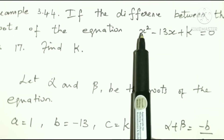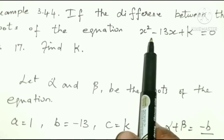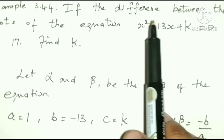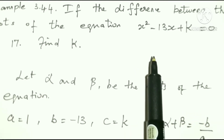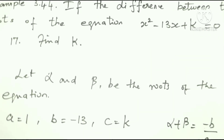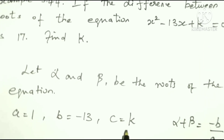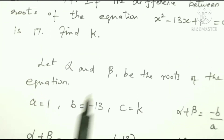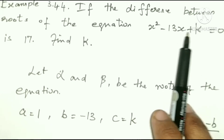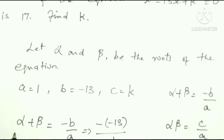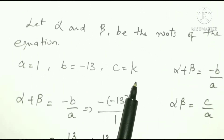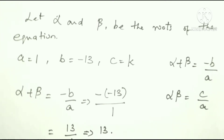In the equation, a, b, and c are identified as: a is the x squared coefficient, b is the x coefficient, and c is the constant term. So here a is 1, b is minus 13, and c is k.